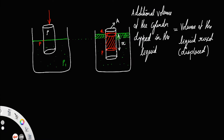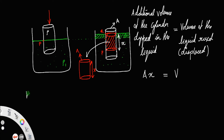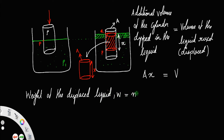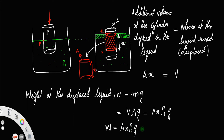Let the cross-sectional area be A. The volume of the cylinder segment is base area times height, which is A times x — equal to the volume displaced. The weight of the displaced liquid is W = mass times g = volume times density times g = A x rho 1 g. Let us call that equation number 1.